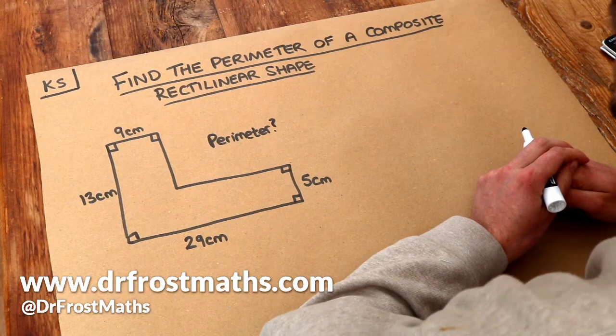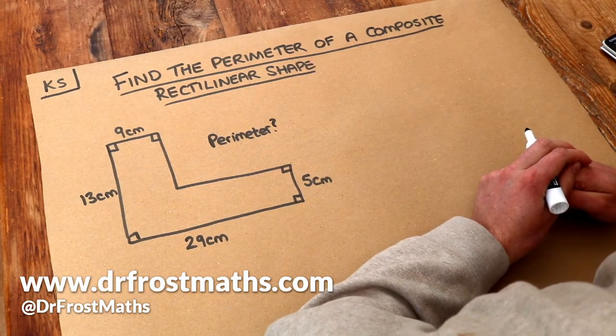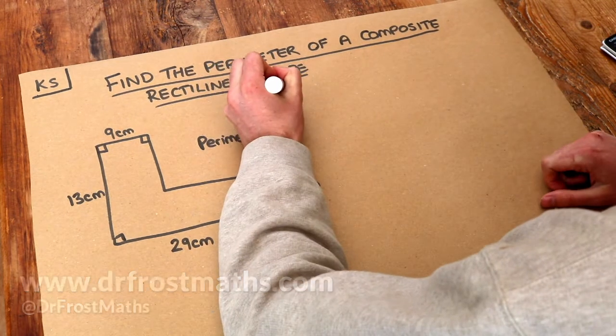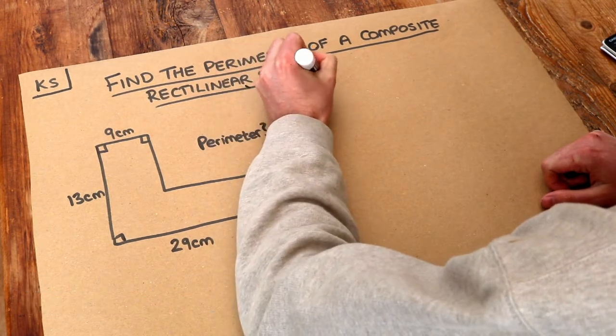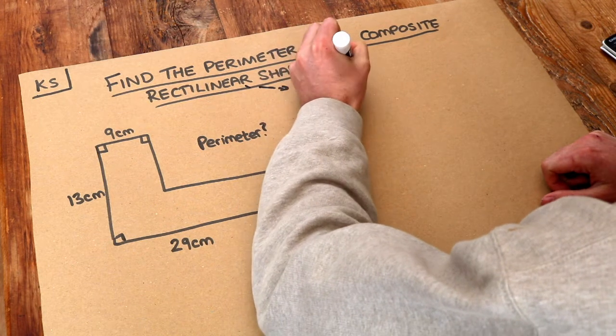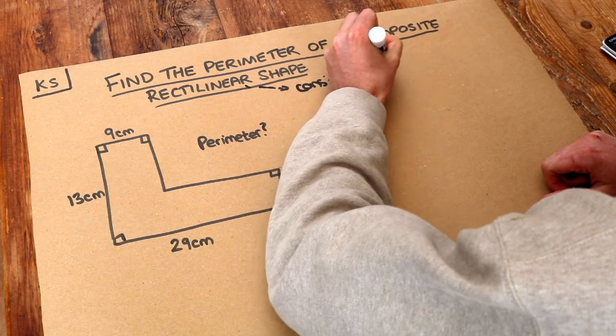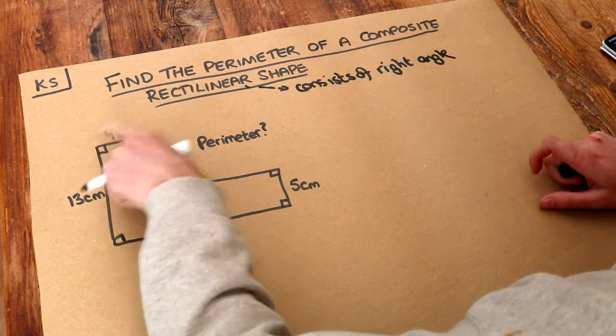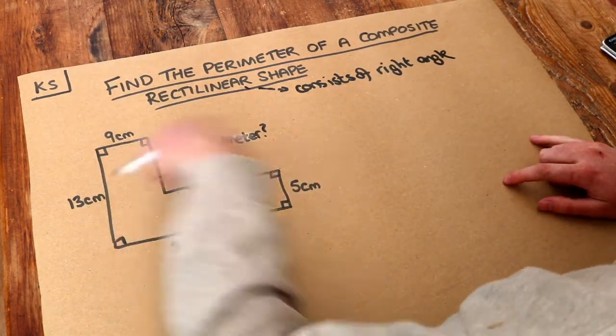Hello and welcome to this Dr. Frost Math key skill video on finding the perimeter of a composite rectilinear shape. Now rectilinear just means the shape consists of right angles only. A right angle is 90 degrees. So we can see in this particular shape it only consists of square corners.